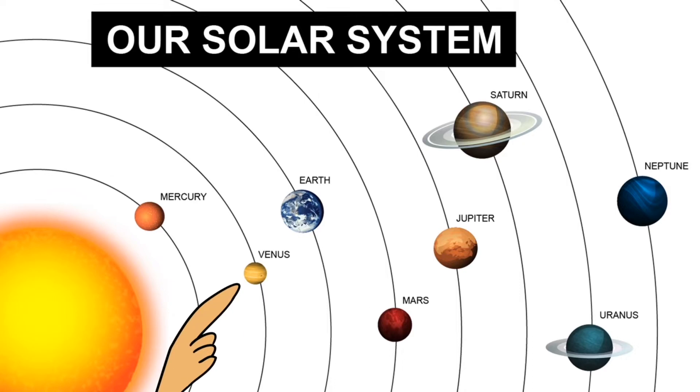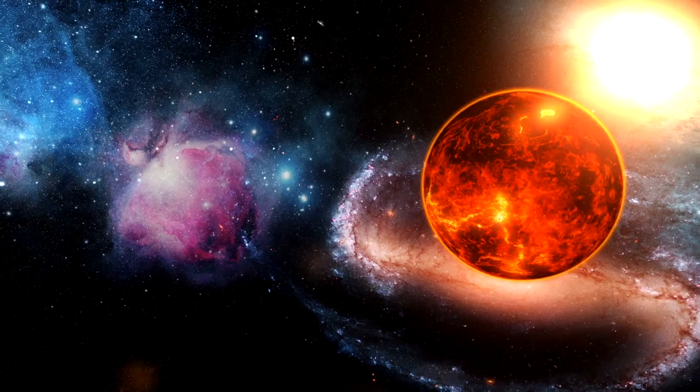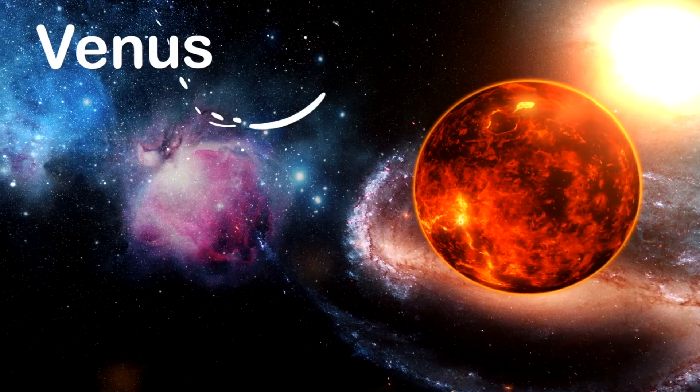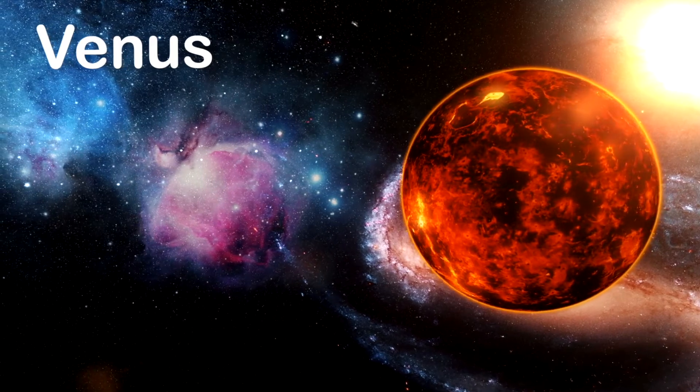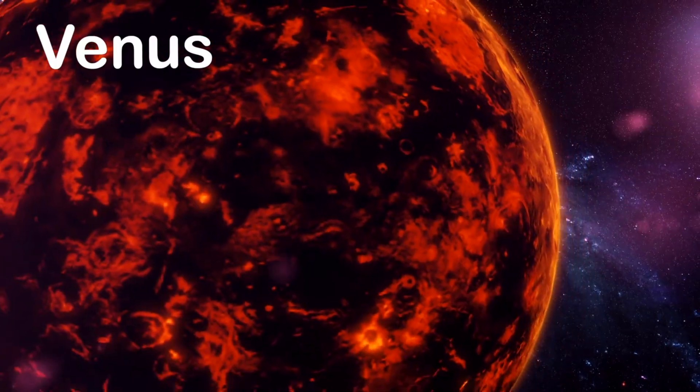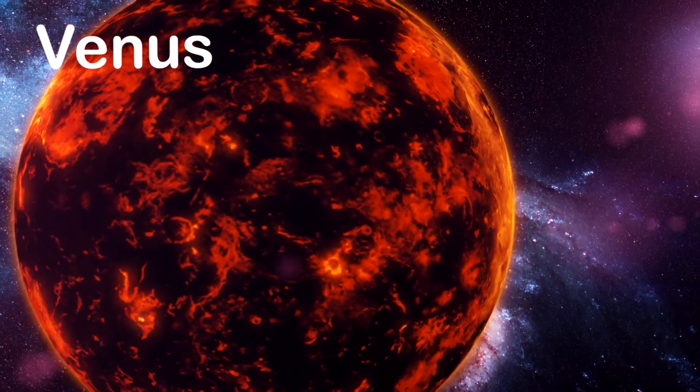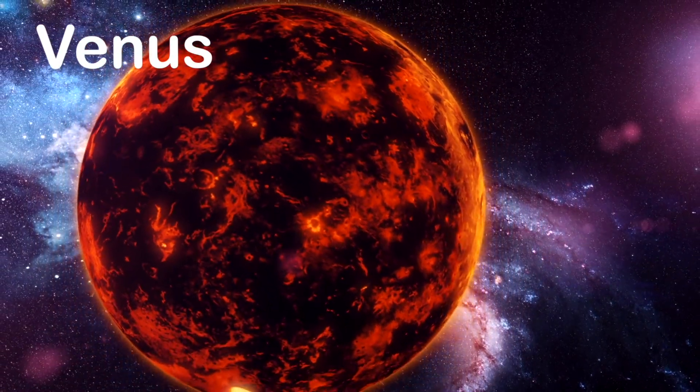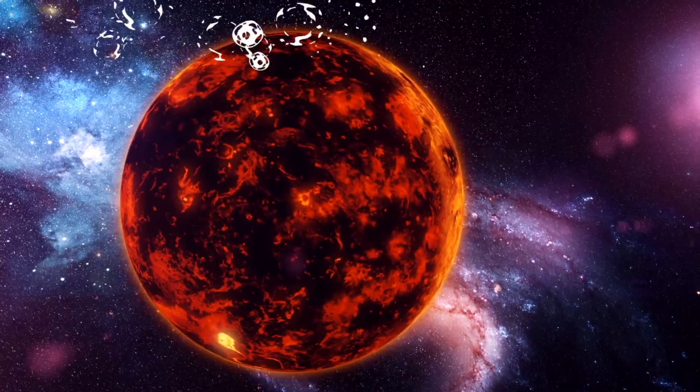The next planet in our solar system is Venus. Venus also known as the morning star. It's the closest to the Earth and much more hotter by far. Just one day on Venus lasts more than a year. It also has a poisonous atmosphere.